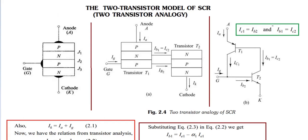First we need to understand the structure of SCR, as shown here. The structure of SCR comprises three terminals: anode, cathode, and gate. It has four layers: P, N, P, N. Because of these four layers, three junctions are created between P and N. Junction J1 exists between the first P and N layer, J2 exists between N and P, and J3 exists between P and N.